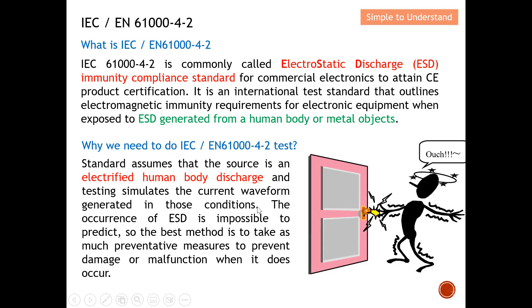The occurrence of ESD is impossible to predict, so the best method is to take preventive measures to prevent damage or malfunction when it does occur. We cannot predict how severe the ESD effect will be, so we take preventive measures to ensure the device is robust. When a human discharges into our EUT or DUT, we want our device to continue functioning as intended. That is why we emulate this test using IEC/EN 61000-4-2.